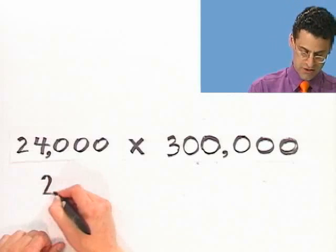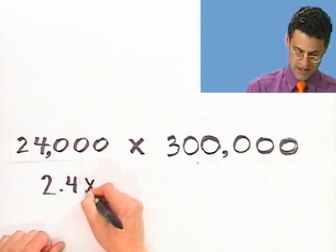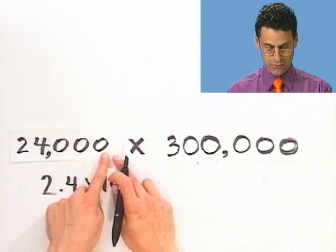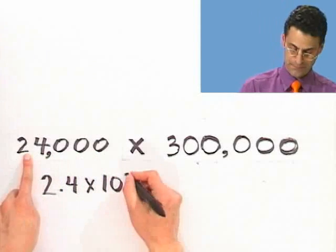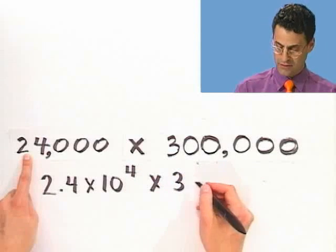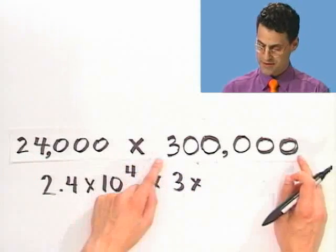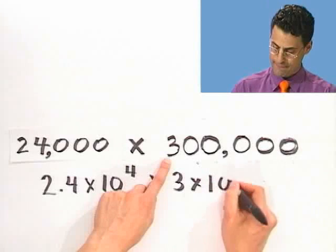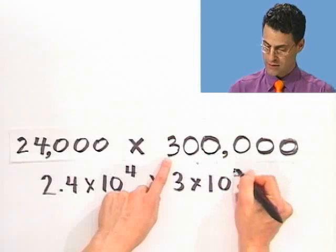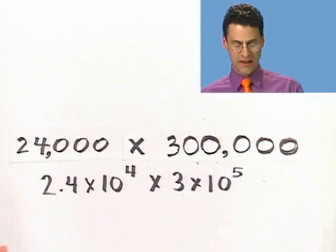What would you do? I'd write this as 2.4 times 10 to the what? Well, let's see. 1, 2, 3, 4. And then I multiply that by 3, or 3.0 if you want to write it that way, times 10 to the what? 1, 2, 3, 4, 5.